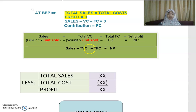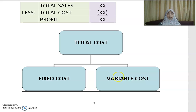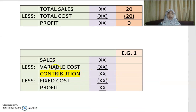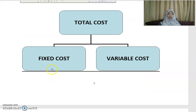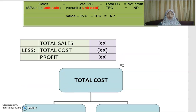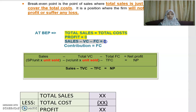Total cost can be split into a fixed portion and a variable portion. So: sales minus variable cost gives you an item called contribution. Sales minus variable cost minus fixed cost gives you profit. Since at break-even profit equals zero, sales minus variable cost minus fixed cost equals zero, which means contribution equals fixed cost.